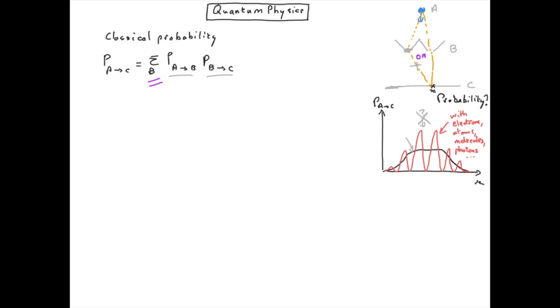So the individual probabilities do not oscillate themselves. There is something wrong about this equation we wrote for classical probability when we go to the quantum case for particles like electrons, atoms, molecules, photons, etc.